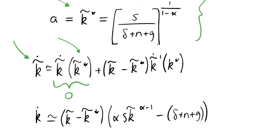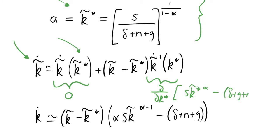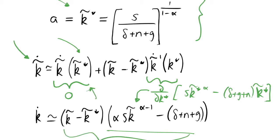Further to that, our derivative term — the derivative of the change in effective units of capital over time — we're just taking the derivative with respect to k* of our equation of motion. So it would be the derivative of that expression with respect to k, and that's going to look something like what I've written below. We're only left with this one term because the other term drops out as it's equal to zero.